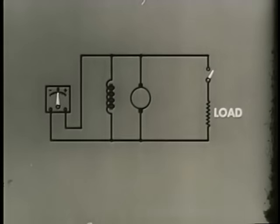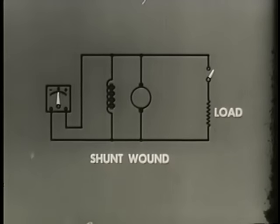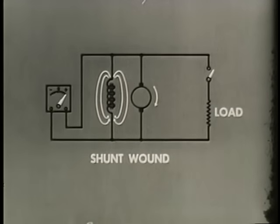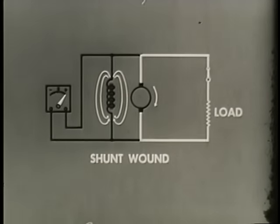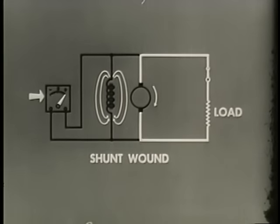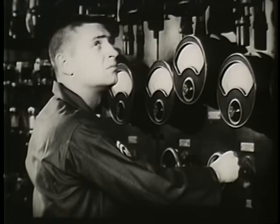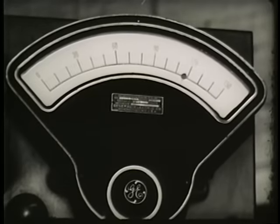When instead of in series the field winding is connected in parallel with the armature and the load, we have a shunt-wound generator. Now the field current is independent of the load current. Therefore, an increase in armature current will not cause an increase in the voltage output — voltage regulation here is greatly improved. In shunt-wound generators, therefore, changing load causes relatively small change in voltage output.